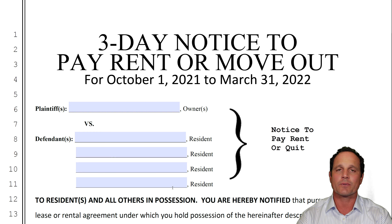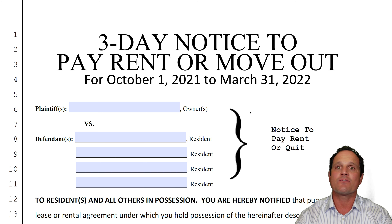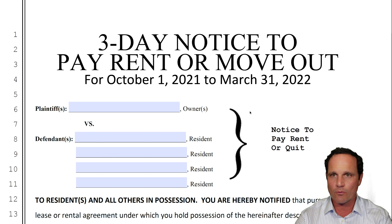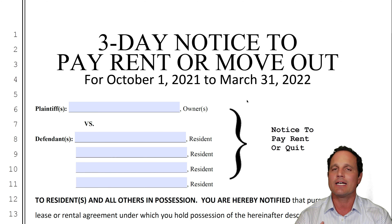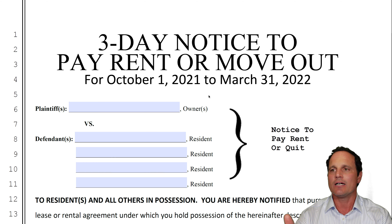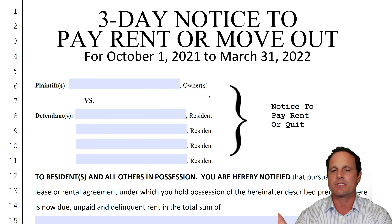We have another three-day notice to pay or quit that you can use — this one's easier to get. This is from the AOA, the Apartment Owners Association. There's a link below so you can download and use this form. But again, talk with an attorney before delivering this notice. This is for that same time period, as specified in AB 832.